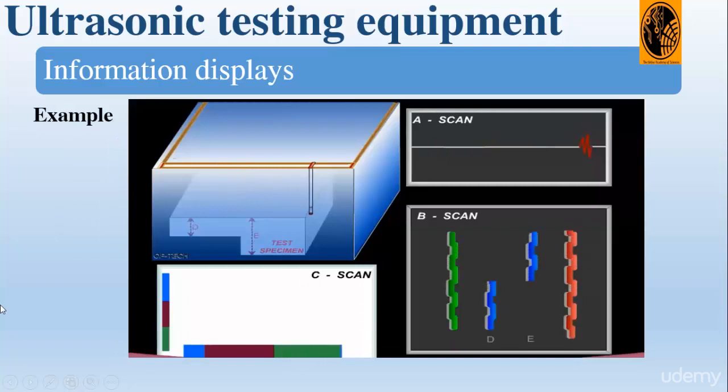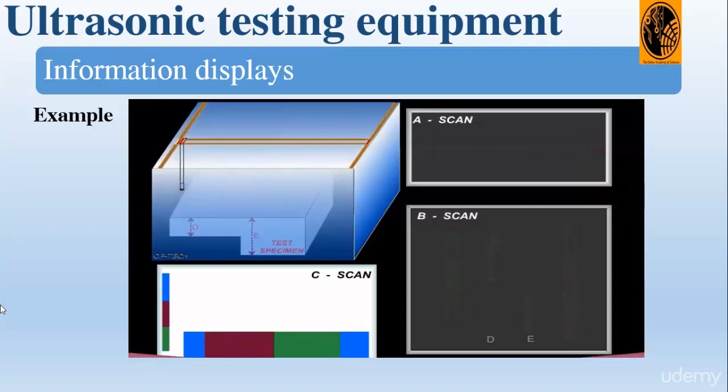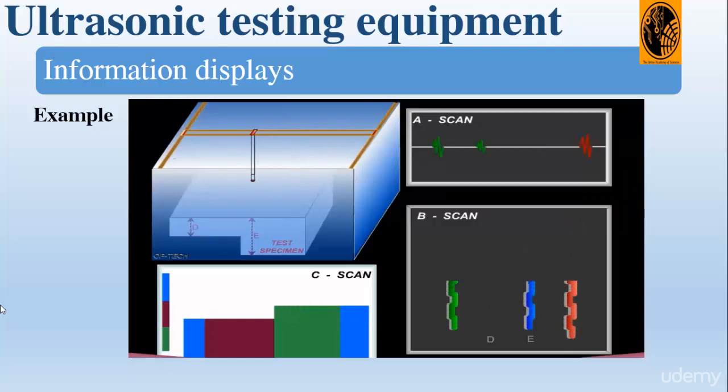Here is an example that illustrates the three scans: the A-scan, B-scan, and C-scan. You can see on the A-scan the amplitude as a function of time, the cross-sectional view on the B-scan, and the top view on the C-scan presentation.